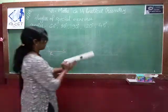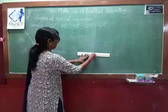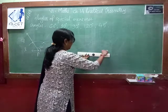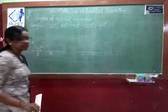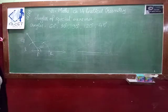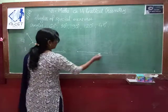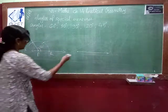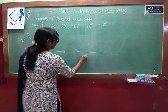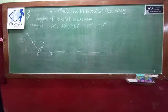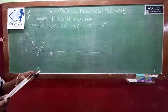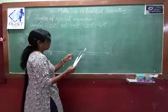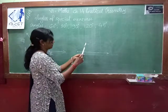Now let's see 90 degrees. A 90 degree angle means if you draw any line segment, its perpendicular is nothing but a 90 degree angle. If you want to draw it with compasses, at point P we draw the 90 degree angle. 90 means 60 plus 30.